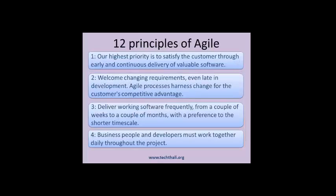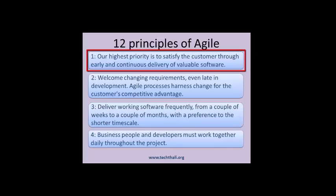12 Principles of Agile. Principle 1: Our highest priority is to satisfy the customer through early and continuous delivery of valuable software. This means the software team must deliver at least one feature per iteration. The customer sees real progress and can give immediate feedback.